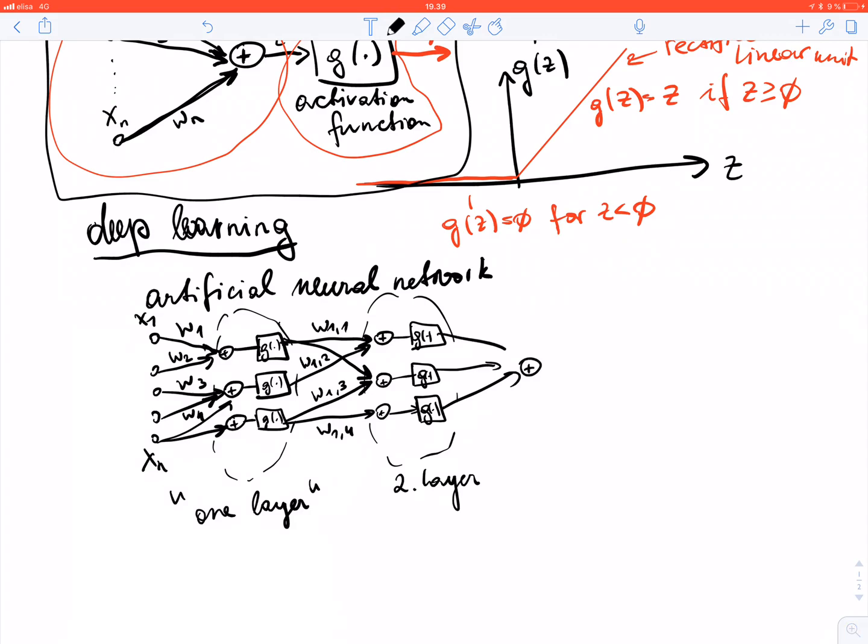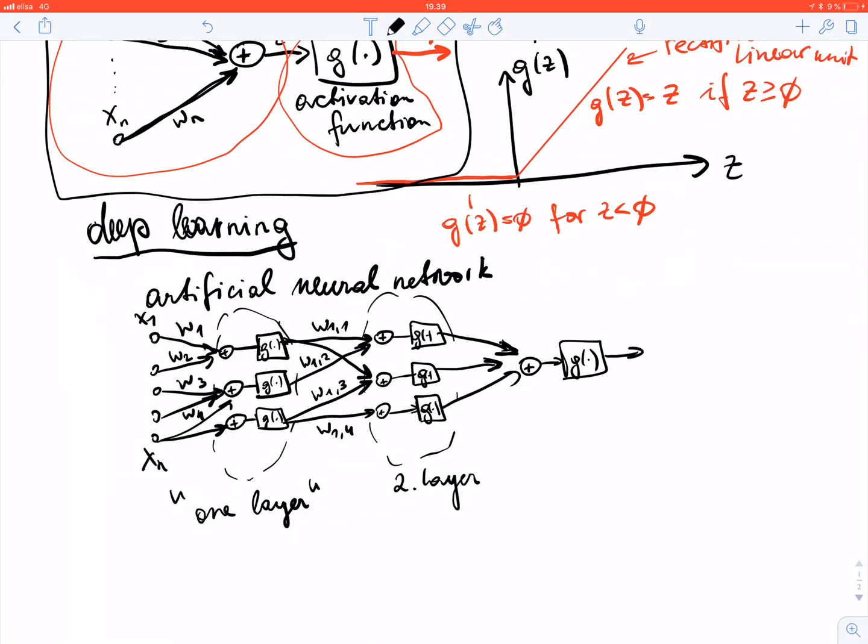At some point we sum up all the outputs from a layer and feed it again to a non-linearity, maybe the same activation function, and obtain an output which is the predicted label. This whole structure here is, similar to decision trees, a flow diagram representation of a mapping. We have the input feature vector, and this whole diagram represents a mapping or a function, a predictor map, which outputs a predicted label.